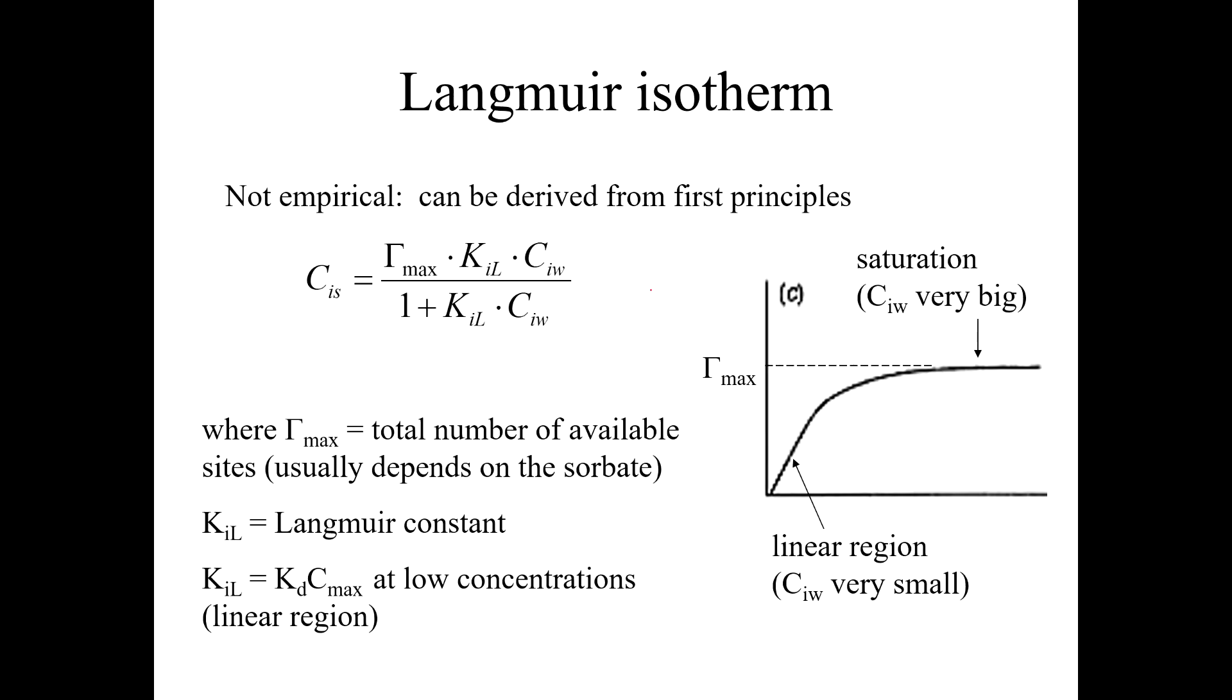So this is what the Freundlich isotherm looks like again. And greater than one will curve upward and less than one will curve downward. Then we have the Langmuir equation. Again, you could derive this from first principles. You've probably seen this equation and you may have seen it with different notation. Like instead of gamma max, a lot of people would use CS max here. Whatever, it's all good. But the formula is basically gamma or CS max times KL times CW over 1 plus KL times CW. So I'm sure you've seen this before.